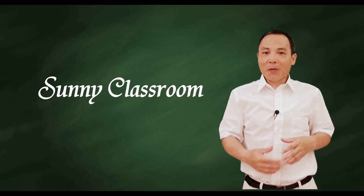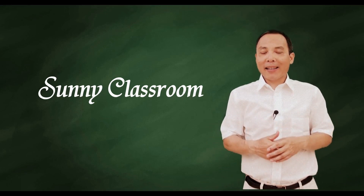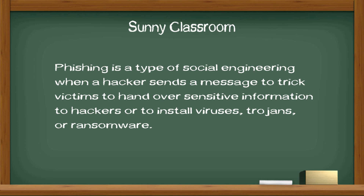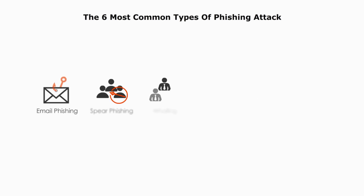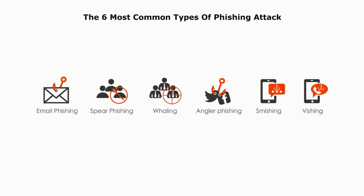Hello, and this is Sunny. Welcome back. Phishing is a type of social engineering, when a hacker sends a message to trick victims to hand over sensitive information to hackers, or to install viruses, trojans, or ransomware. Today I will talk about the six most common types of phishing attacks.